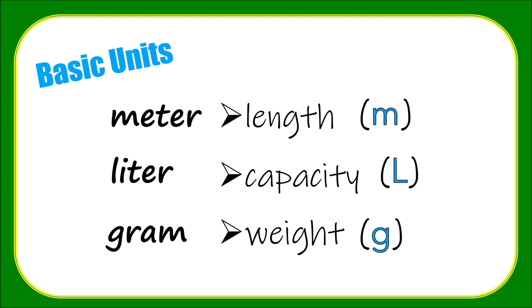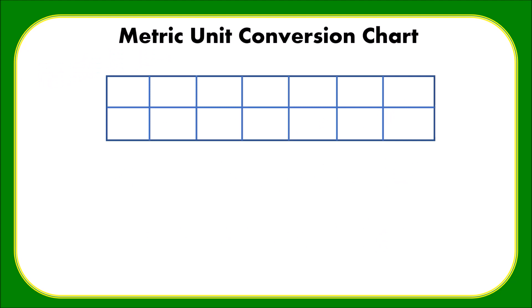And gram to measure weight, which abbreviation is letter G. To convert, we have to know the order of prefixes in our metric system. Starting from thousand to thousandths, for bigger units we have kilo K, hecto H, and deka DA.